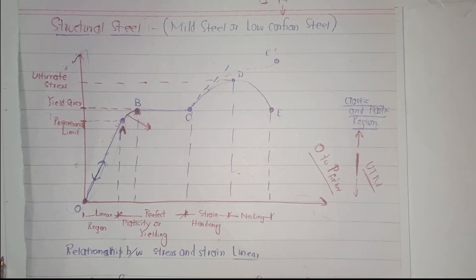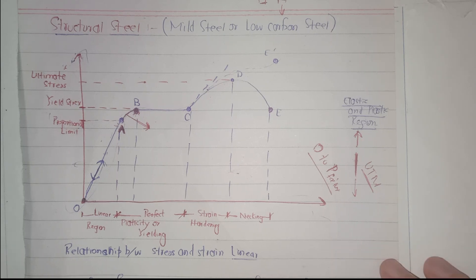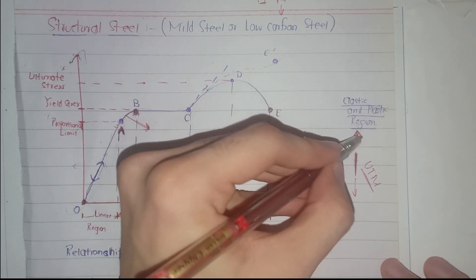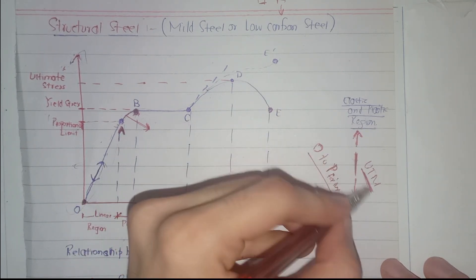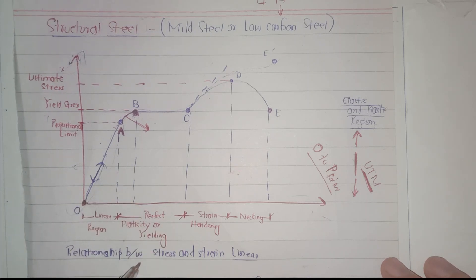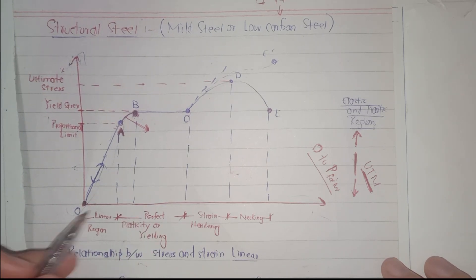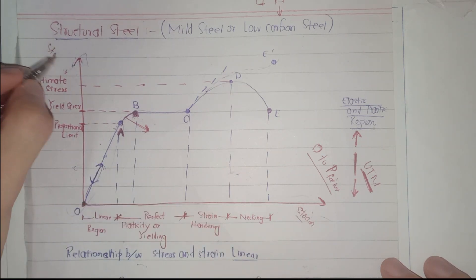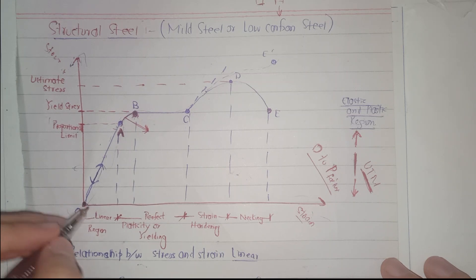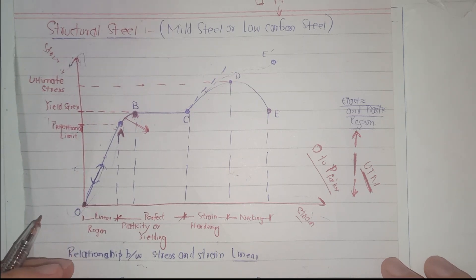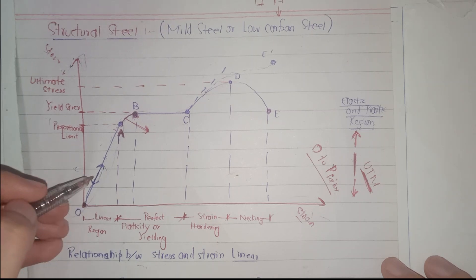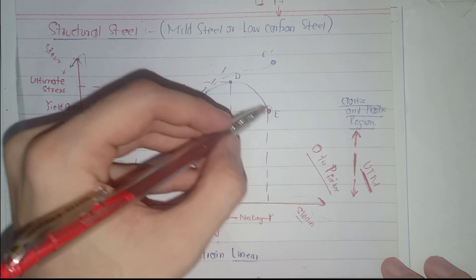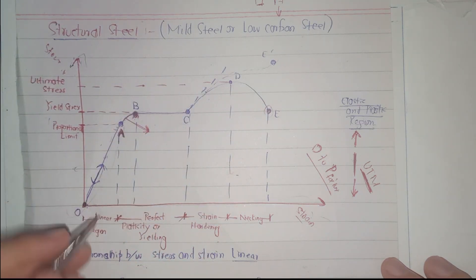This is the stress-strain diagram for structural steel or mild steel. When we apply a tensile load to a steel bar under a UDM machine, we obtain this diagram. At first, when the load is zero, the strain is going to be zero. On the x-axis we have strain and on the y-axis we have stress. As we increase the load to the point of rupture, there are certain important points and regions that need to be discussed.